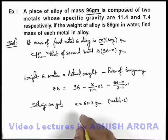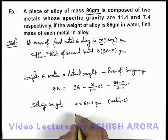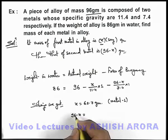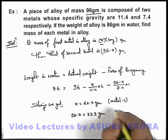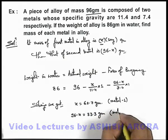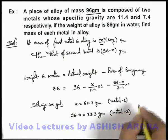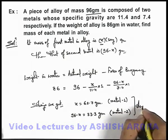And for metal 2, we can simply state it is 96 minus x, so 96 minus 62.7 can be written as directly 33.3 grams. This is the mass of metal 2 in alloy, and that will be the answer to this problem.